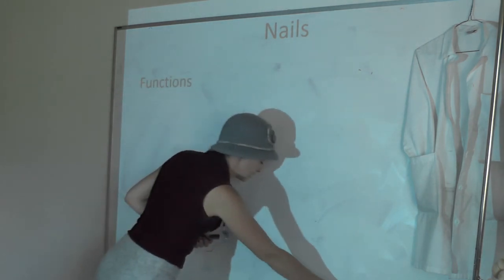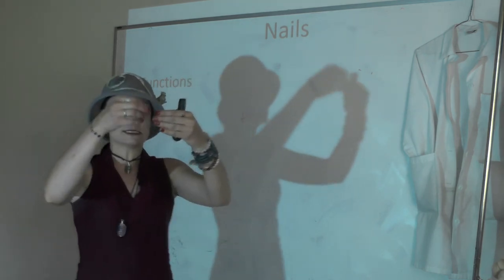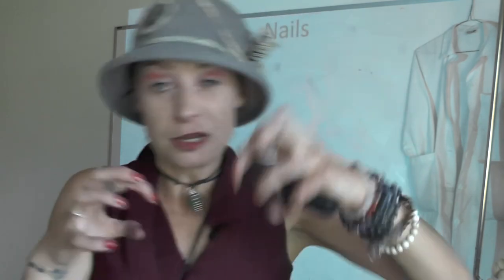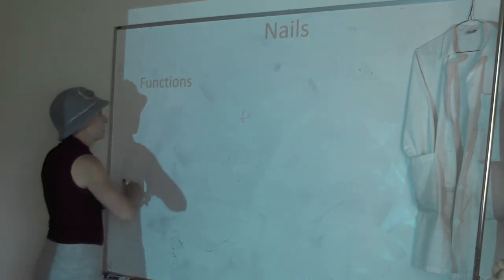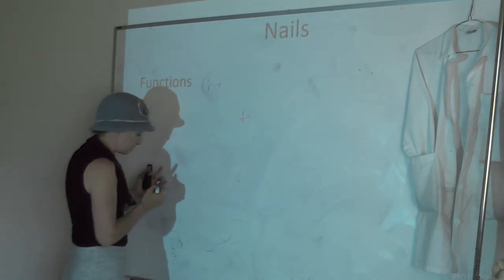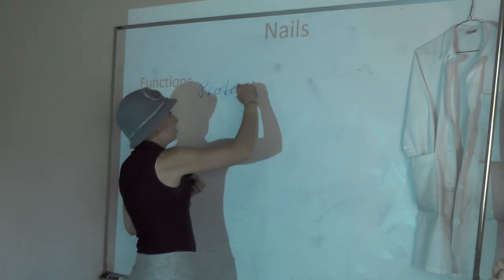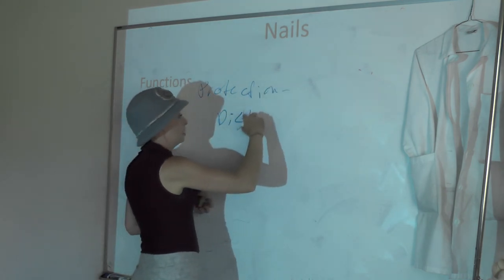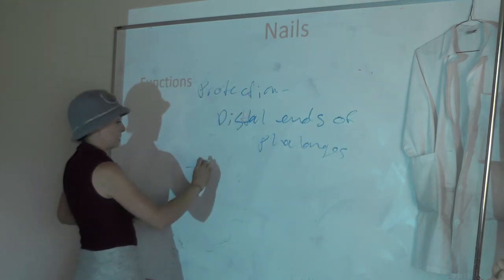Nails: we won't go over the structure in great detail. The function of nails is protection — they protect the distal ends of the phalanges. They can also be used for defense. So nails function in protection of the distal ends of the phalanges and in defense.